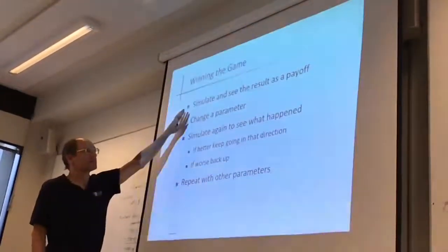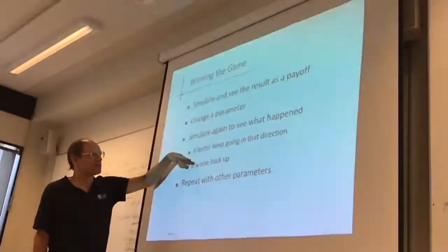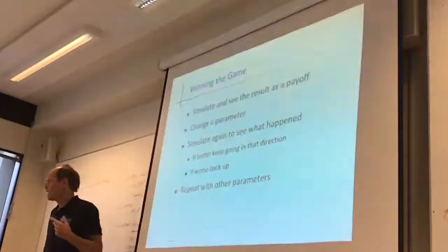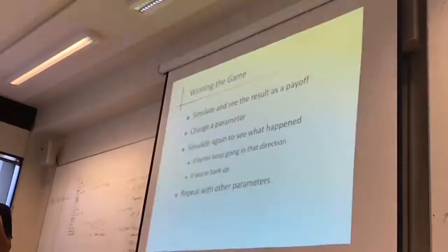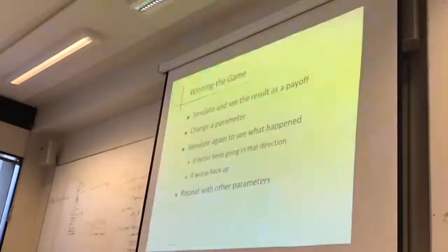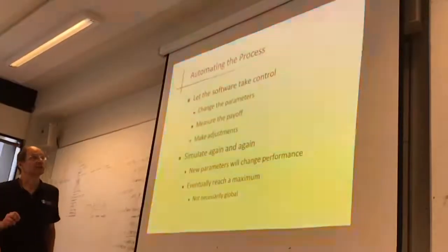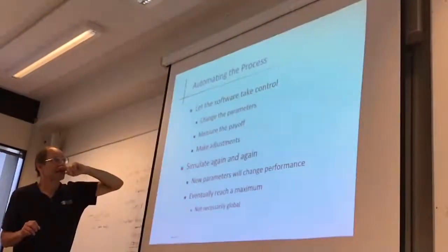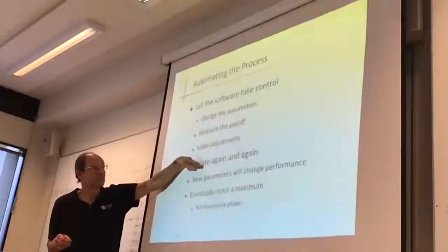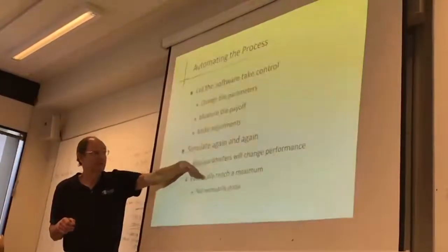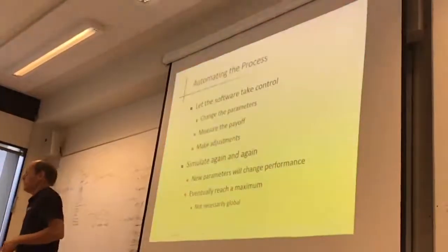In order to win the game, we simulate to see what the result gets as a payoff. We change some parameters, simulate and see what happened. If it's better, we keep going in that direction. If it's worse, we back up and then repeat that with other parameters. The algorithm behind Powell is a little bit more sophisticated than that, but it is a goal-seeking algorithm that attempts to move along a set of parameters to make everything better. It's called a conjugate gradient method — one of the standards for fairly efficient optimization techniques.